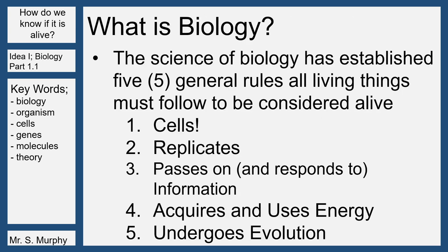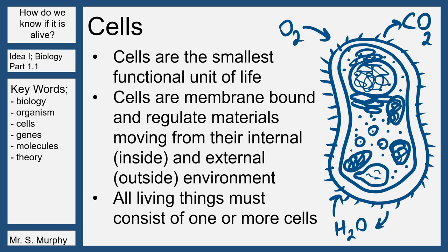Within biology, the science of biology has established five general rules of all living things, and these living things must follow them to be considered alive. Those five rules are: one, cells — is it made up of cells? Two, does it replicate? Does it make more of itself? Three, does it pass on and respond to various types of information? Four, it acquires and uses energy. And five, it undergoes evolution over time.